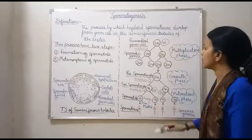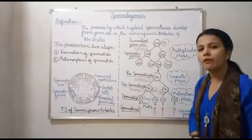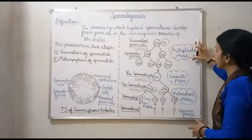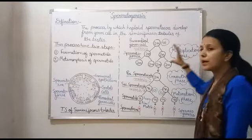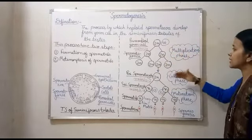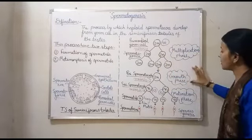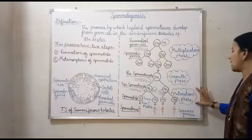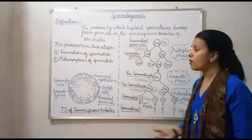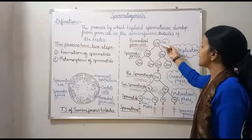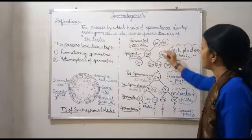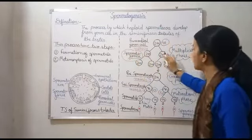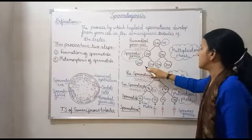Primordial germ cells का 2N number है। Human beings के अंदर 46 chromosomes present होते हैं। इस process को हम 3 parts में divide करते हैं: number one is multiplication phase — इसके अंदर only cells multiply होती हैं; number two is growth phase — एक particular cell grow करेगी; and last one is maturation phase — जिसके अंदर spermatids form हो जाएंगी। Primordial germ cell में mitotic division होता है, mitotic division के through spermatogonia बन जाती है। Again mitotic division will occur, and these become four cells।